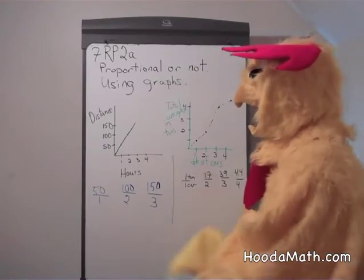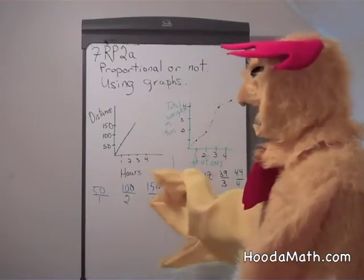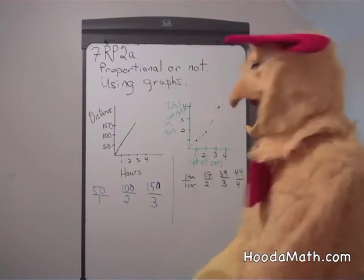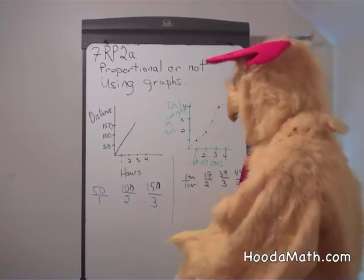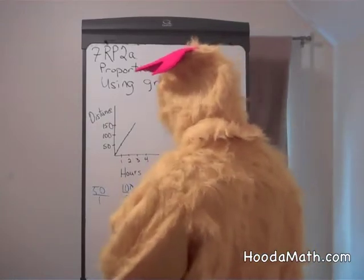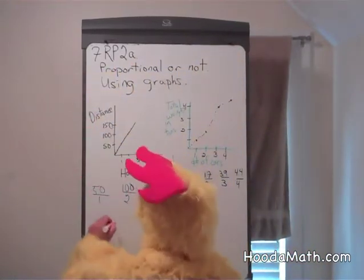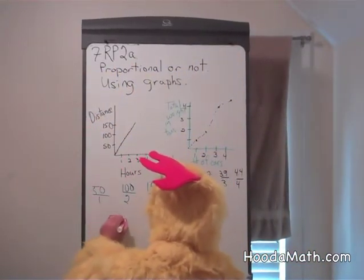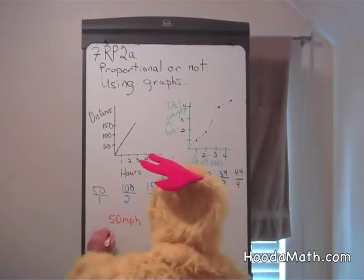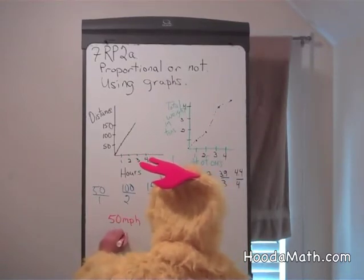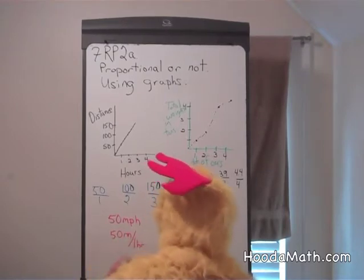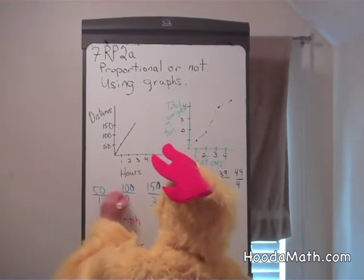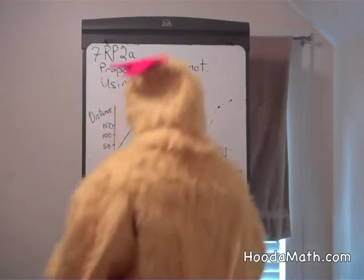Well, 50 divided by one is 50, 100 divided by two is 50, and 150 divided by three is 50. The rate the car traveled was 50 miles per hour, or 50 miles in one hour. The unit rate is the same, so these are proportional.